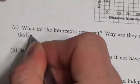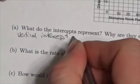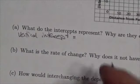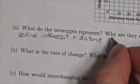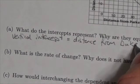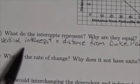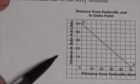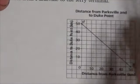So the vertical intercept is going to be equal to the distance from Duke Point. Let's just think about that. The distance from Duke Point—look at the graph here. Distance to Duke Point is going to be 50 kilometers.